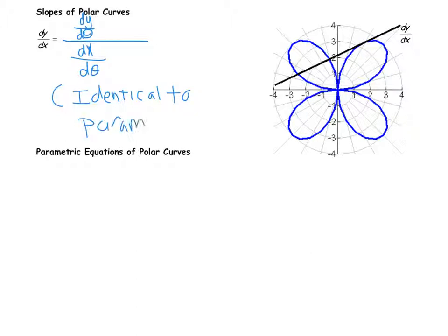That's because you can express polar equations as parametric equations. You might wonder: what do we mean by dy/dθ and dx/dθ? When we do polar functions, everything is always written as r in terms of theta — r is always a function of theta. As we've seen in prior examples, the equations always have r and theta. So why are we talking about dy/dθ and dx/dθ? Where do those come in?